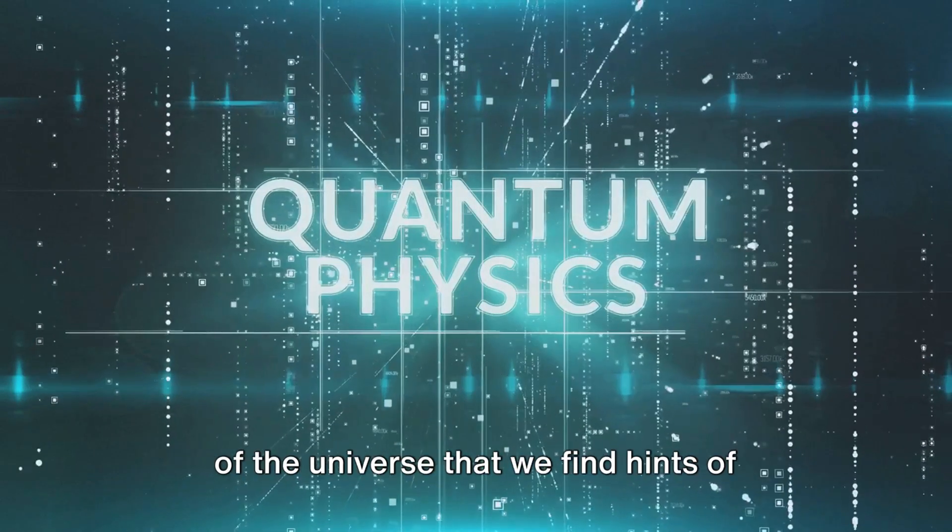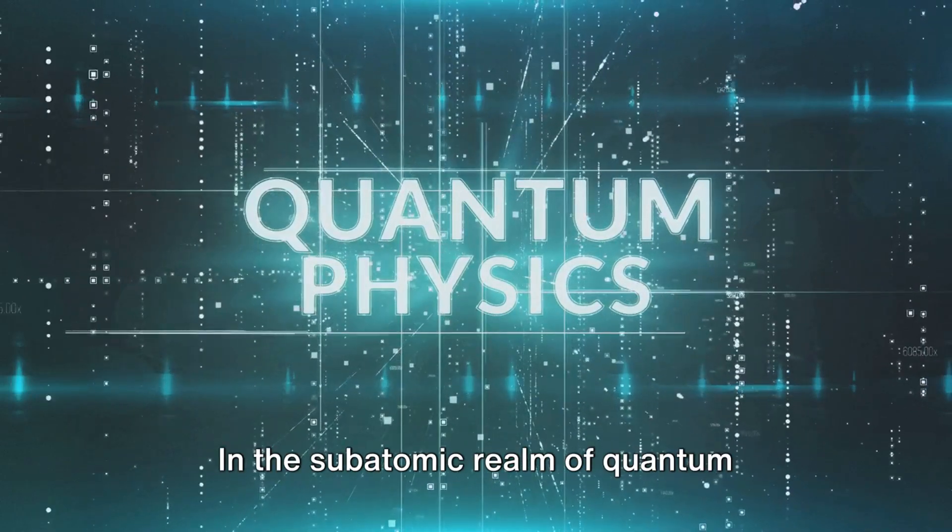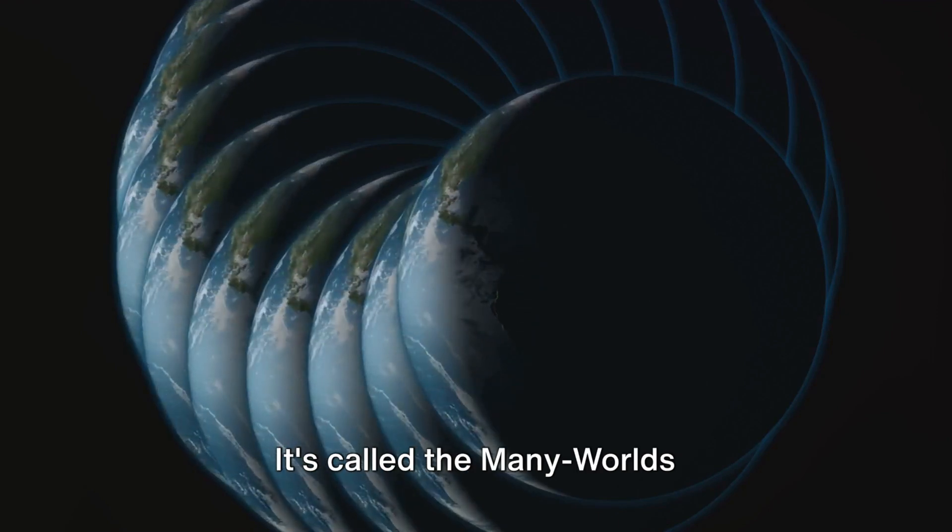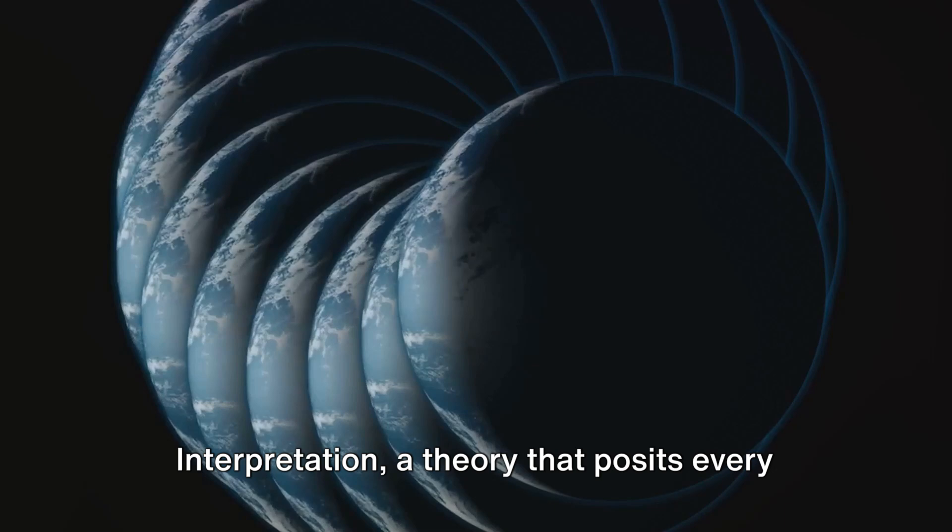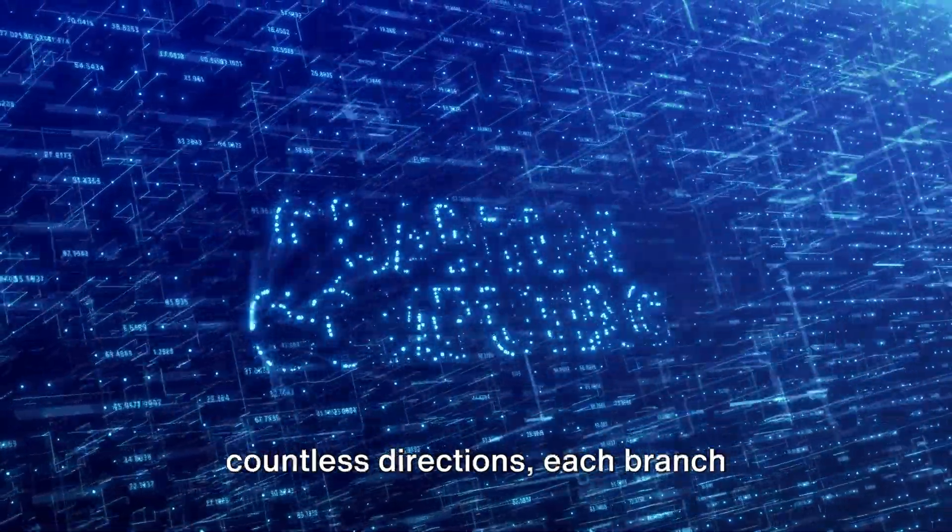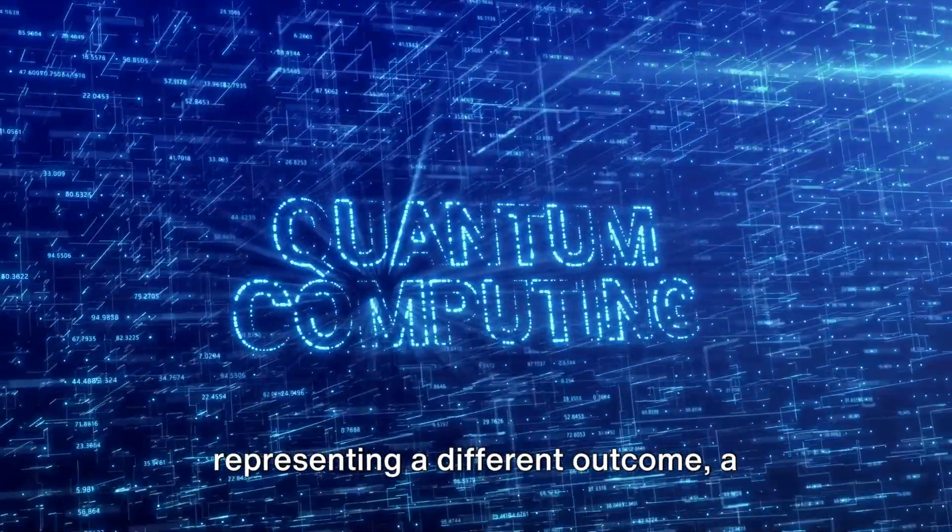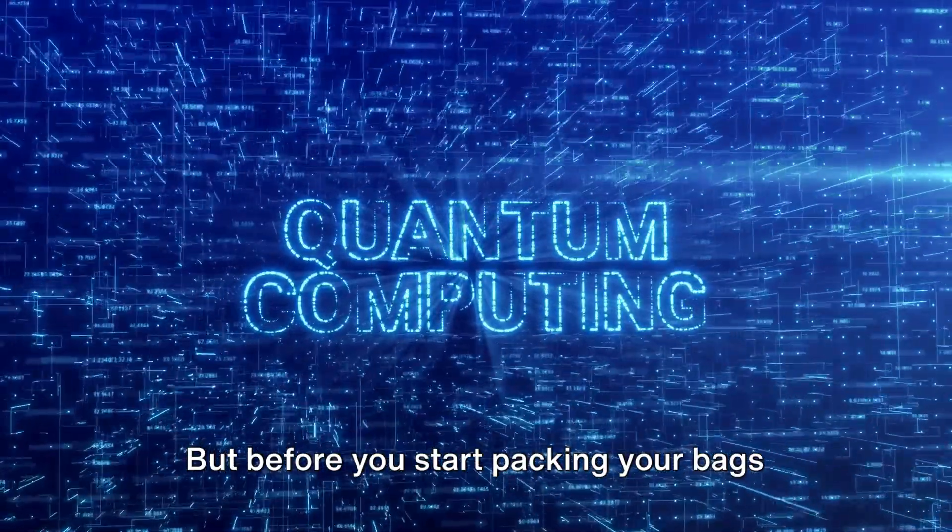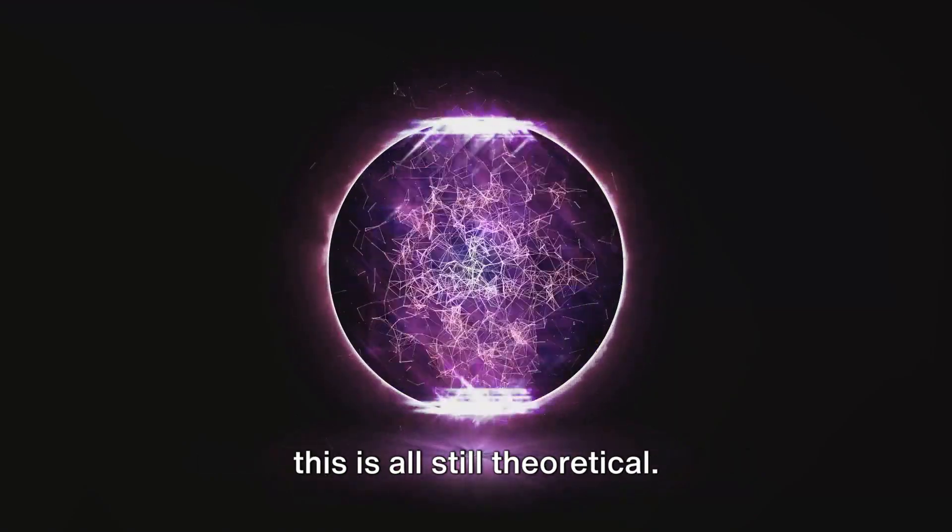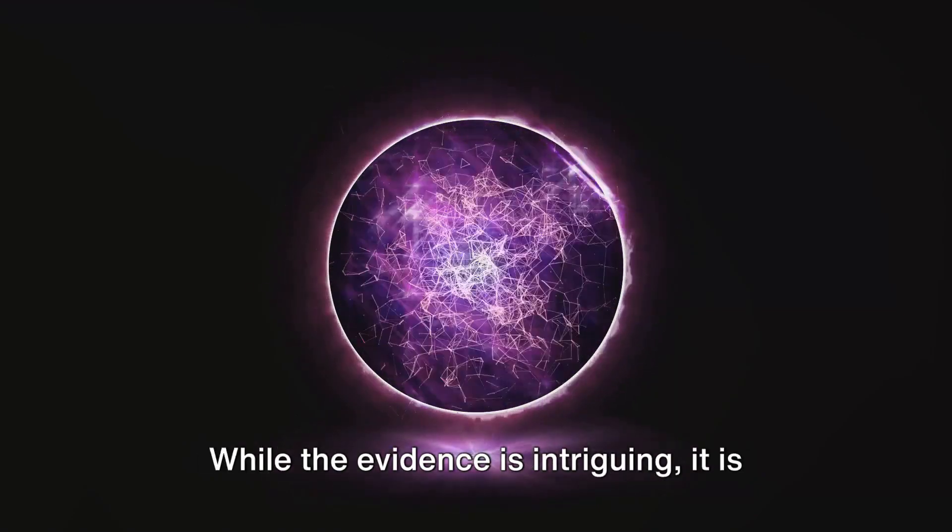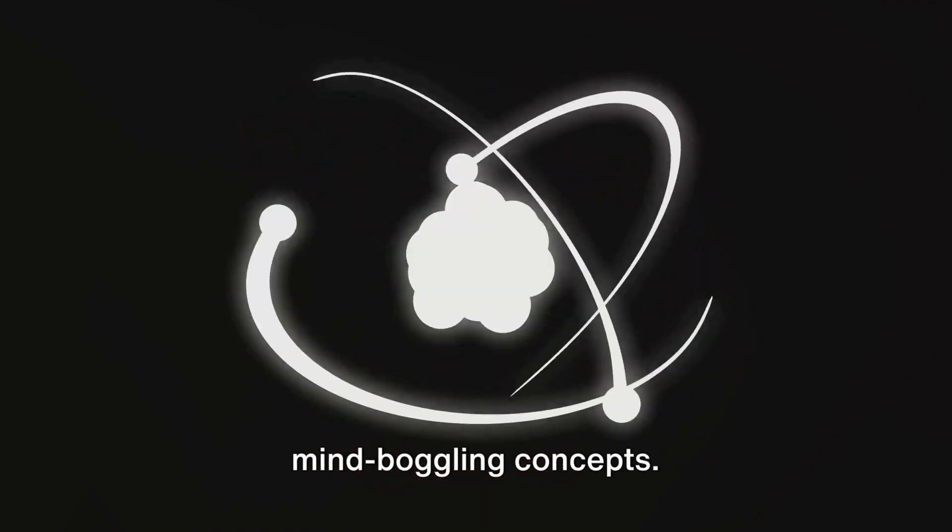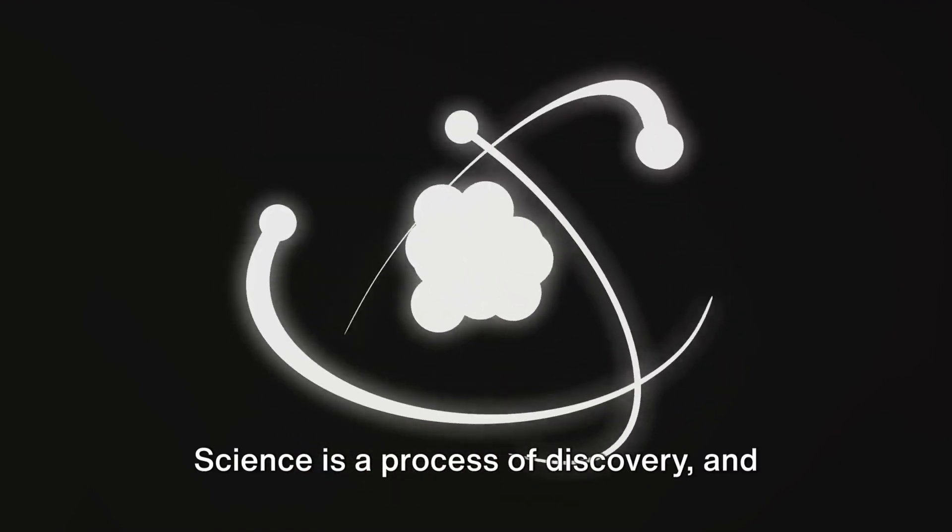However, it's not just from the macrocosm of the universe that we find hints of other realities. In the subatomic realm of quantum physics, there exists a theory that suggests multiple realities. It's called the Many Worlds Interpretation, a theory that posits every decision or action that could happen does happen, each in a separate universe. It's like a tree branching out into countless directions, each branch representing a different outcome, a different reality. But before you start packing your bags for a parallel universe where you're a rock star, it's crucial to remember that this is all still theoretical. While the evidence is intriguing, it is not yet conclusive. We're still in the early stages of understanding these complex and mind-boggling concepts.